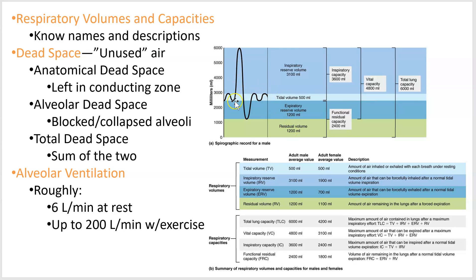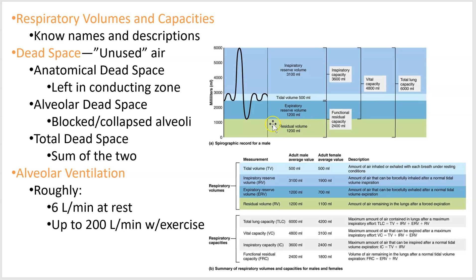Here's a pretty common graph you'll also see in lab — respiratory volumes and capacities. Volumes are single measurements; capacities are sums. For example, inspiratory reserve volume plus tidal volume together make the inspiratory capacity. Know the names and descriptions. I won't ask you the specific volume values in lecture — those are for lab — but you do need to know that the amount of air left in your lungs after you breathe all the way out is called the residual volume.